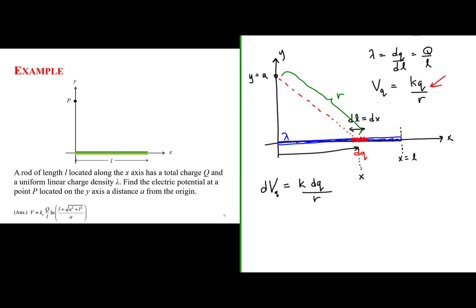Our goal is to express the charge dQ in terms of the geometry of the problem — in terms of the spatial coordinates. Since the charge only lies along the x-axis, let's express dQ in terms of x. We have dQ equal to lambda dL, and since dL equals dx, we can say dQ equals lambda dx. That's step one: we now have our representative charge element in terms of a spatial coordinate.